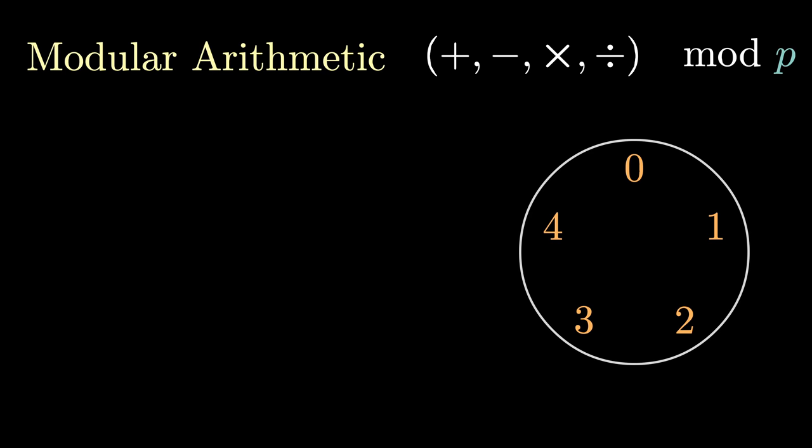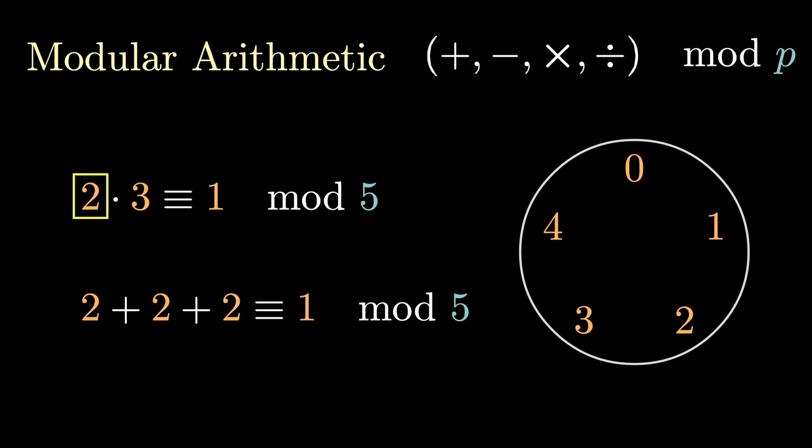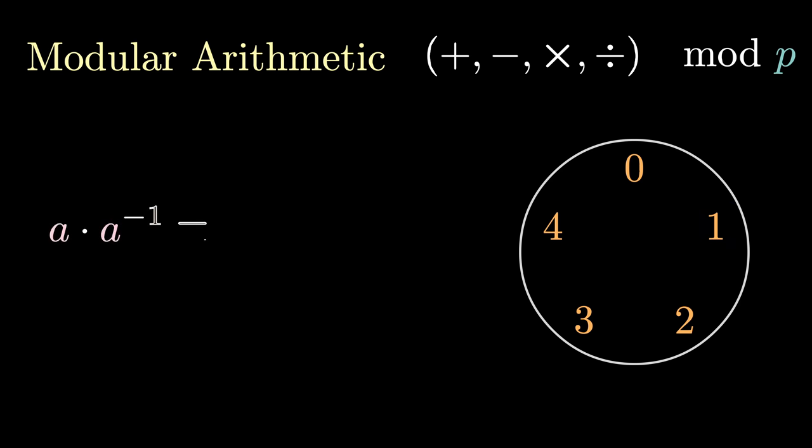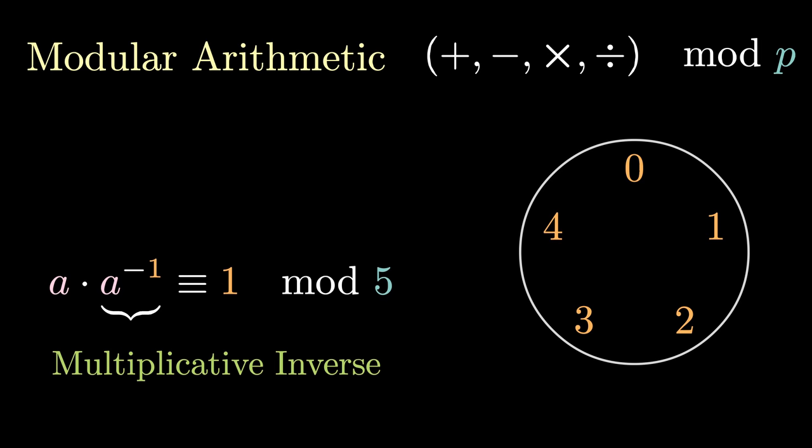Similarly, we can do multiplication mod p, where we multiply the numbers out and then take mod p. So for instance, two times three is six mod five is one. On the circle, this is the same as adding two three times, since two times three is two plus two plus two. And finally, we define division similar to subtraction by multiplying by the multiplicative inverse. Here, the multiplicative inverse a inverse can be defined as a times a inverse is equal to one.